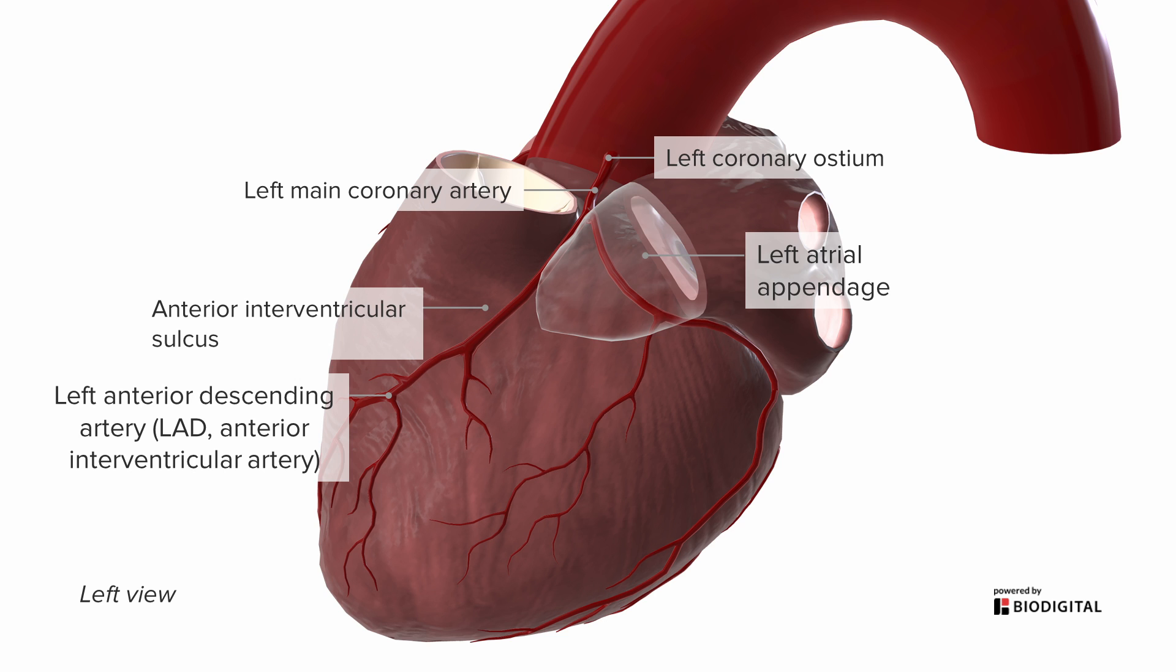The other branch is going along that groove still between the atrium and the ventricle. That branch is going to be called the circumflex artery, because it's going to head around to the posterior surface.